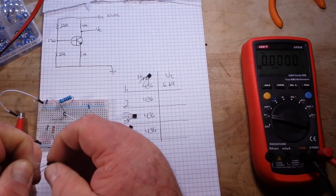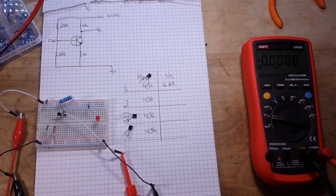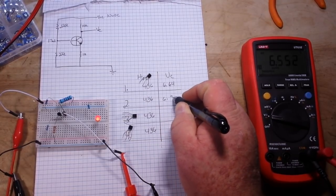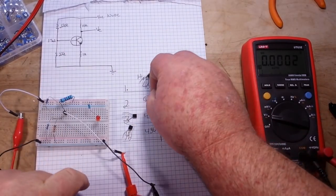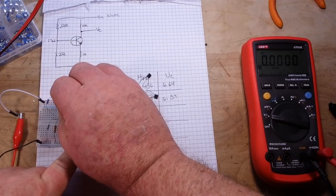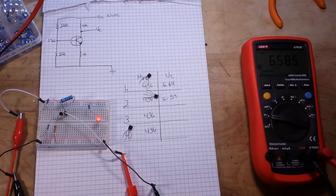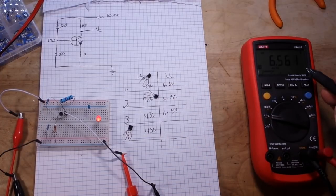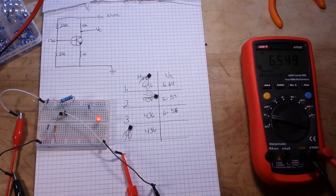All right, then we'll bring in number two. Again, if you're doing this for something that really matters, don't touch that with your fingers. Six point five seven. We'll call this one six point five seven. Number three. Six point five eight. Oh, it's dropping a little bit. I'm gonna call it six point five six.